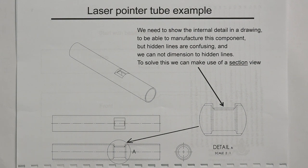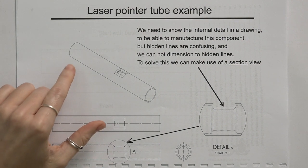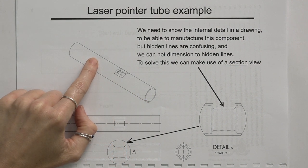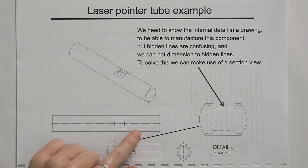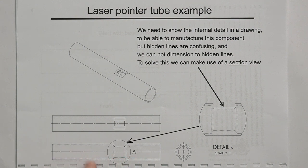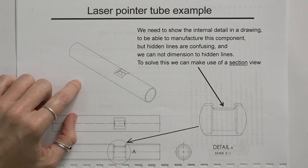In this tutorial we'll look at a very simple sectioning exercise, specifically looking at a laser pointer tube. If we have a laser pointer tube that looks like this and we are drawing three views, a top view where we see the slot, we have a principal view and you can see all the hidden detail that we have here in the principal view indicating what's happening on the inside of this tube.